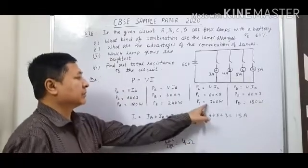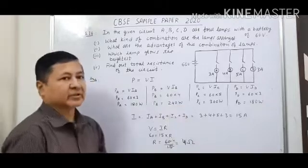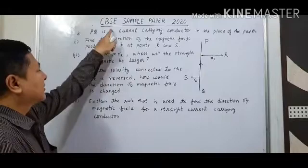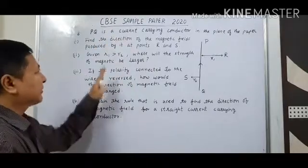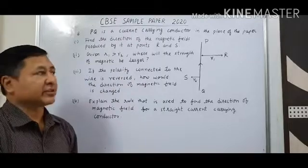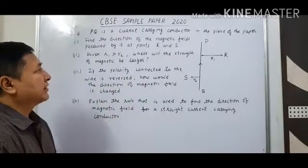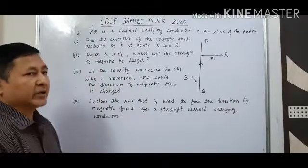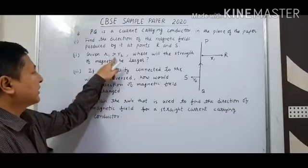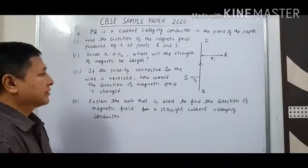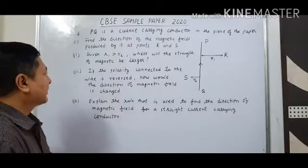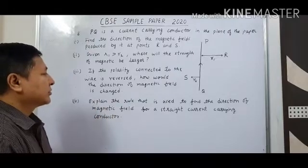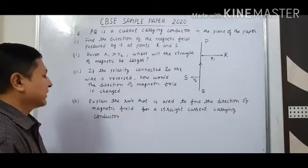So lamp C glows the brightest and the total resistance is 4 ohm. Now, the next question from the CVAC sample paper 2020 is a 5-mark question based on the chapter 'Magnetic Effect of Electric Current.' PQ is a current-carrying conductor in the plane of the paper. Find the direction of magnetic field at points R and S, given R1 is greater than R2. Where will the magnetic field strength be larger? If polarity is reversed, how will the direction change? Explain the right-hand thumb rule.